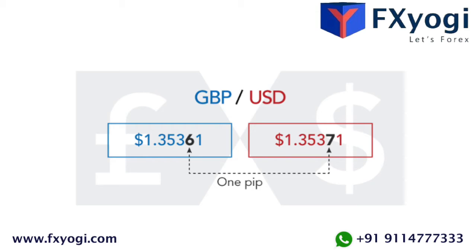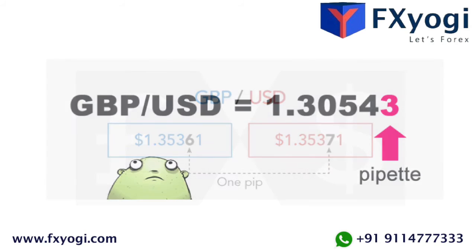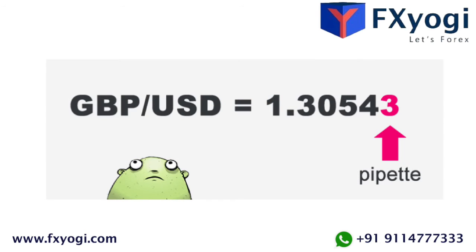What is a pipette? There are forex brokers that quote currency pairs beyond the standard four and two decimal places — to five and three decimal places. They are quoting fractional pips, also called points or pipettes. For instance, if the GBP/USD pair moves from 1.30542 to 1.30543, that 0.00001 USD move higher is called one pipette.